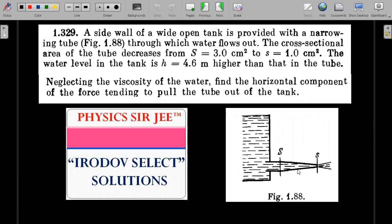We are requested by Irodov to calculate the force on this exit pipe. The language that he uses is find the horizontal component of the force tending to pull the tube out of the tank. The tube if it's not attached here would actually get pulled out towards right, so he's asking what's the value of that force that is holding this particular thing. It's just a situation where the tank is getting emptied through a pipe which is tapered and has areas of cross section at the start of its tapering as capital S and at the end as small s, and the height of the tank is h which is given in the question.